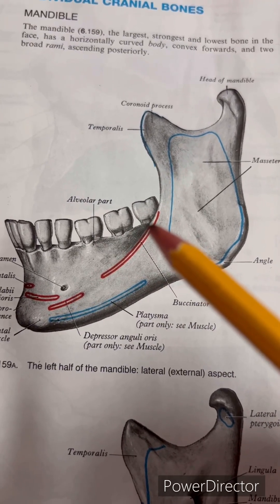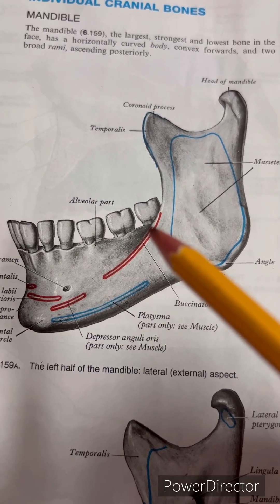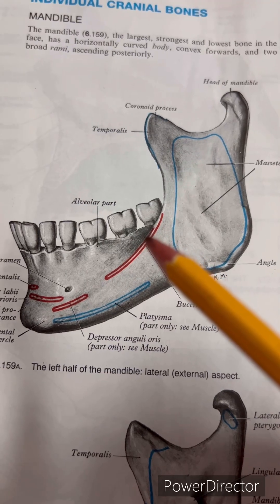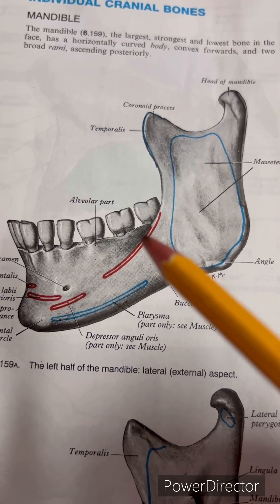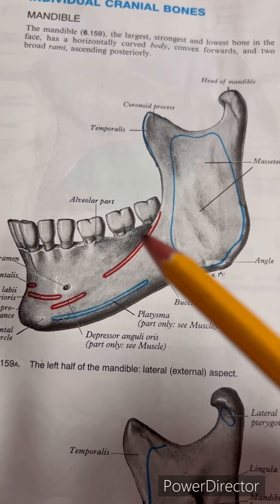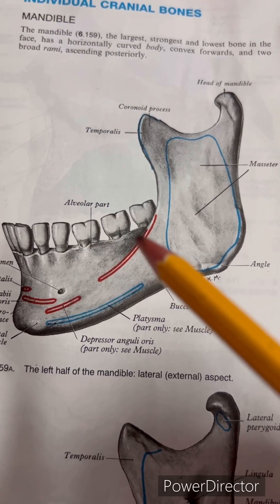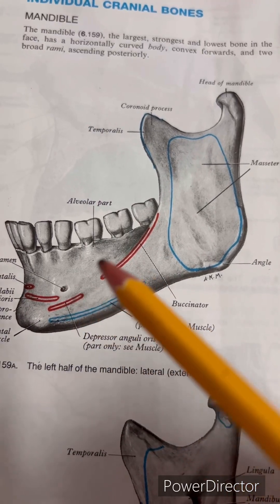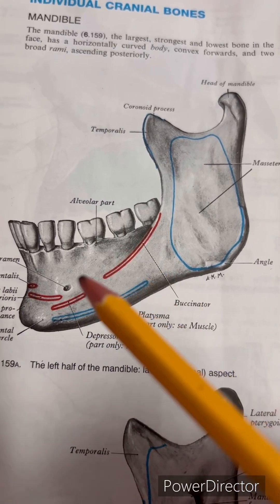The buccinator extends medially behind the third molar to the pterygomandibular raphe. Adjoining this alveolar border, the bone is covered in buccal mucosa.